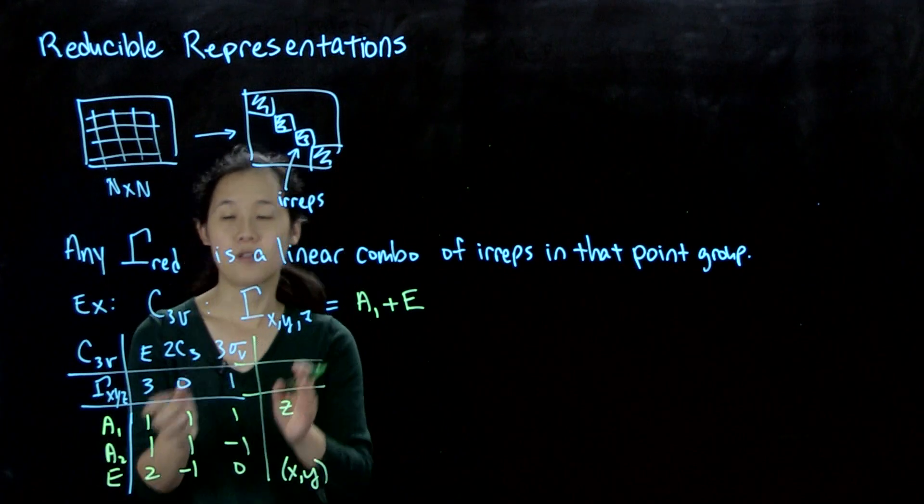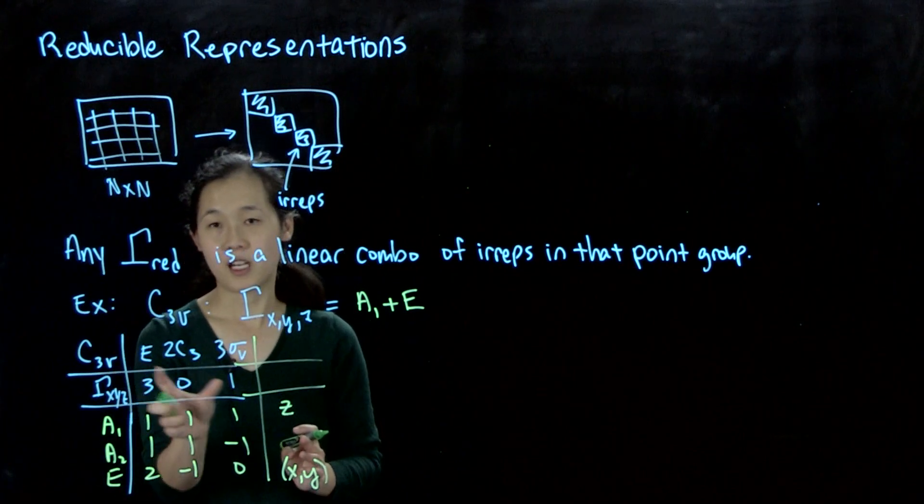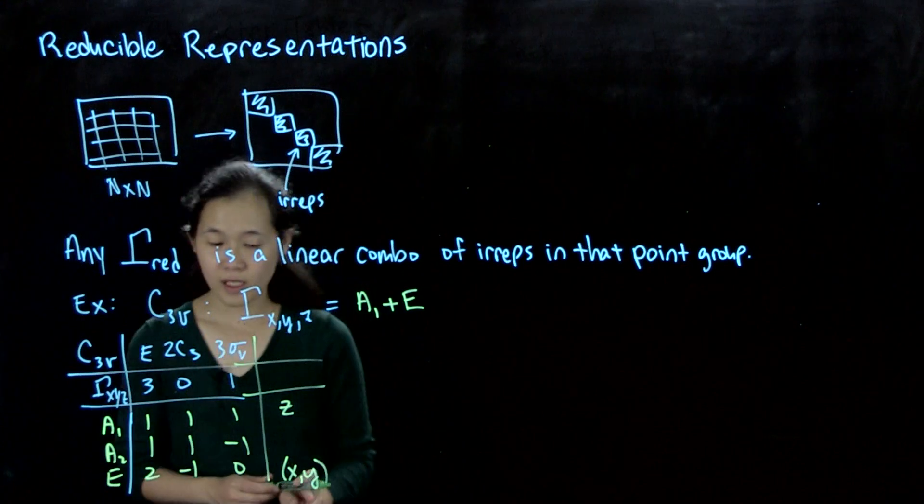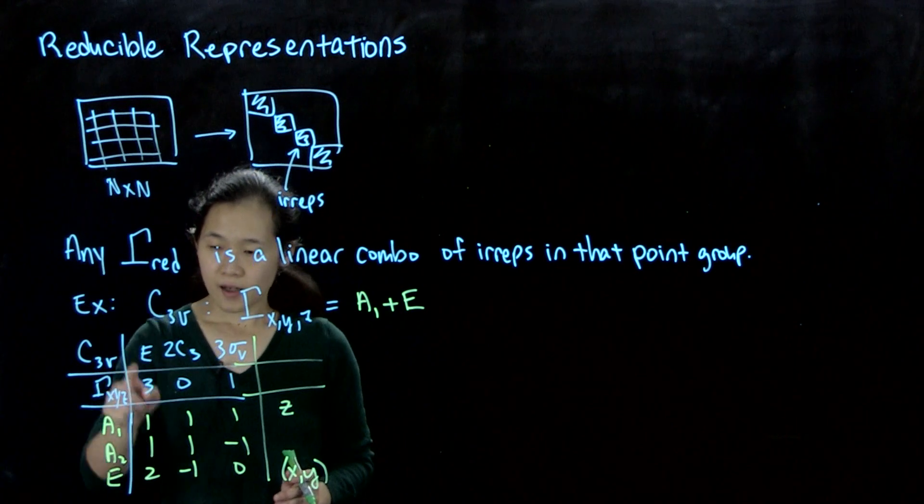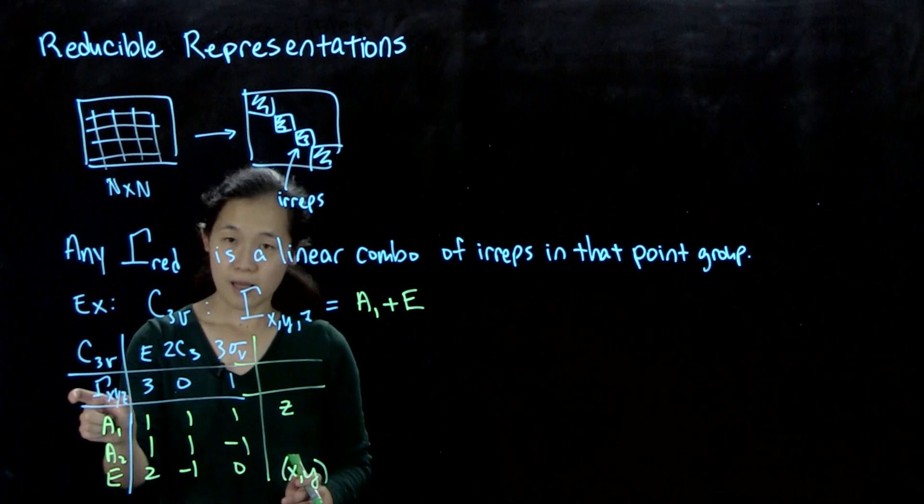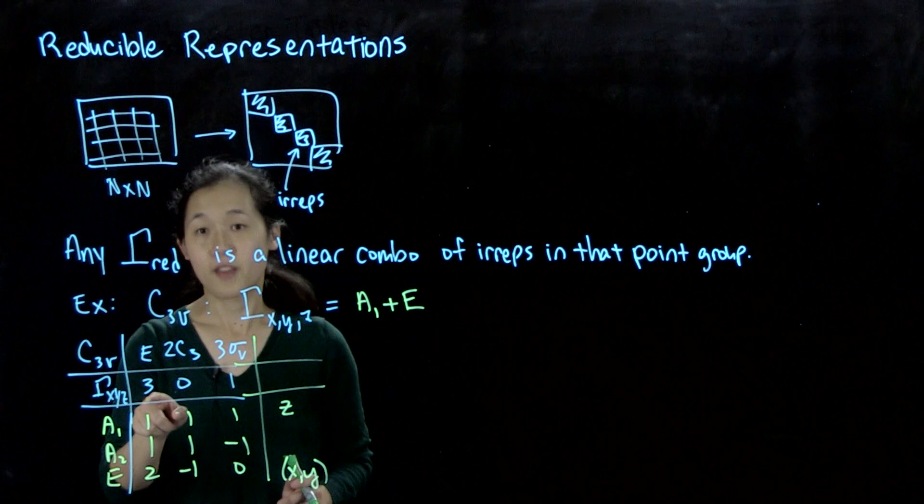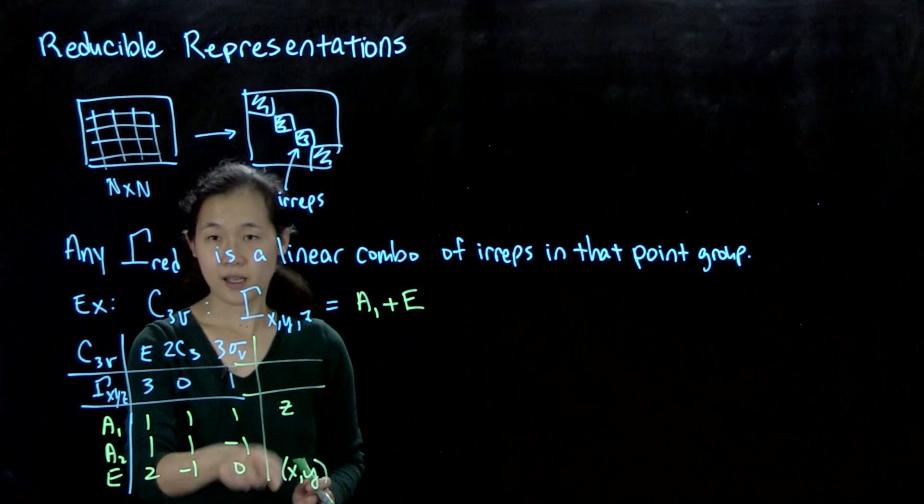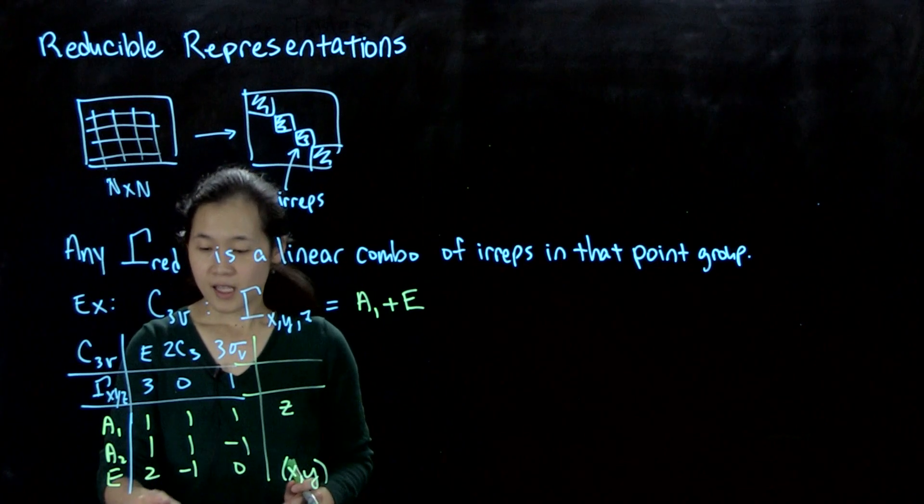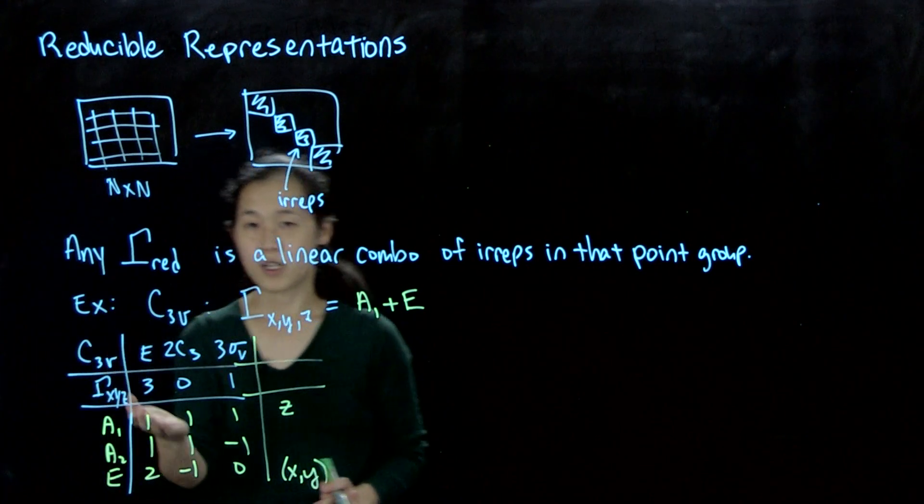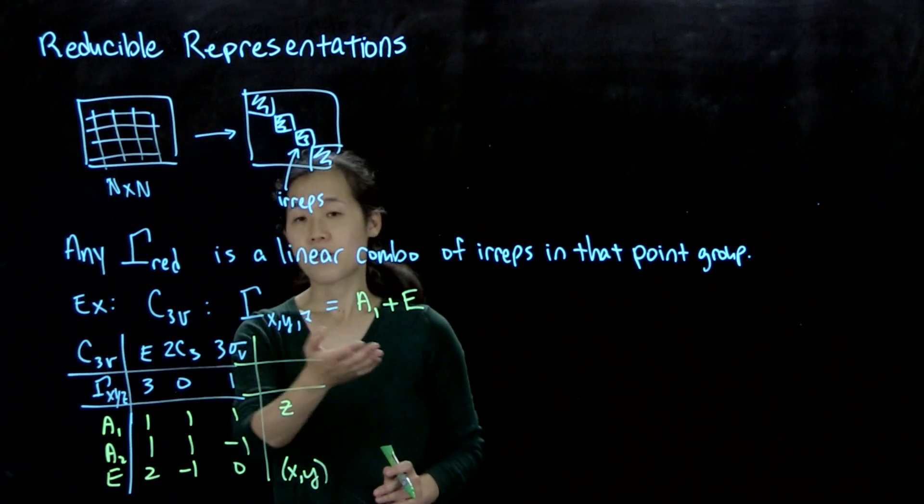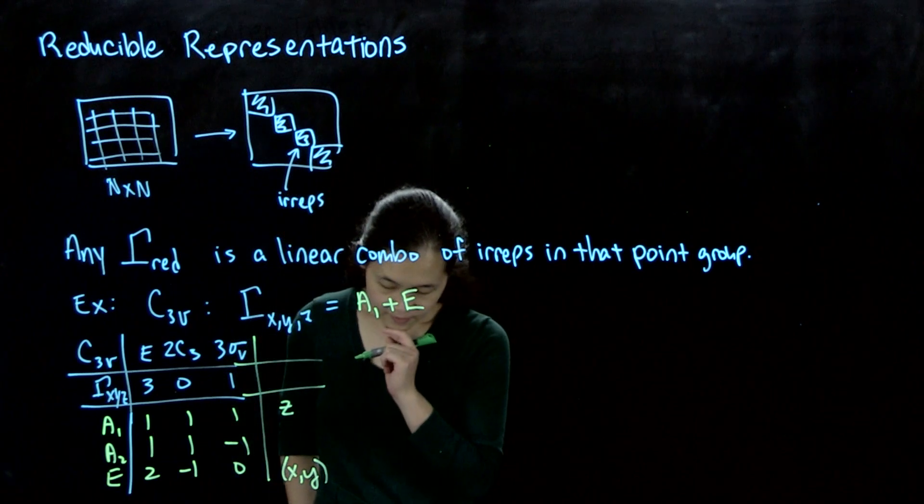I'll also point out that the character under E for our gamma reducible is the order. There's got to be the number of things in there. We have three things: x, y, and z. That's because e irrep has an order of 2, and the a1 irrep has an order of 1. So altogether, we still have three things there.